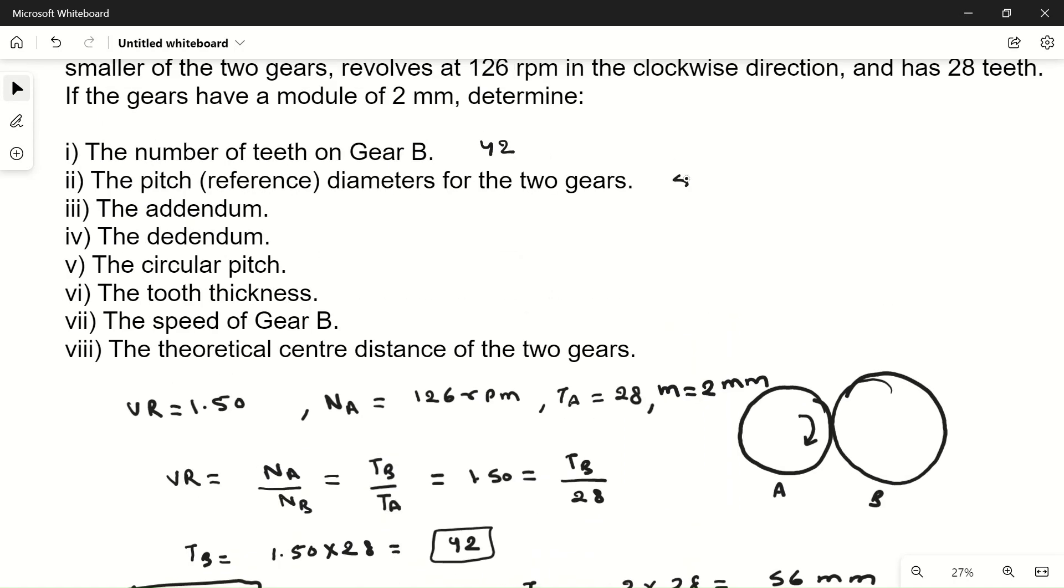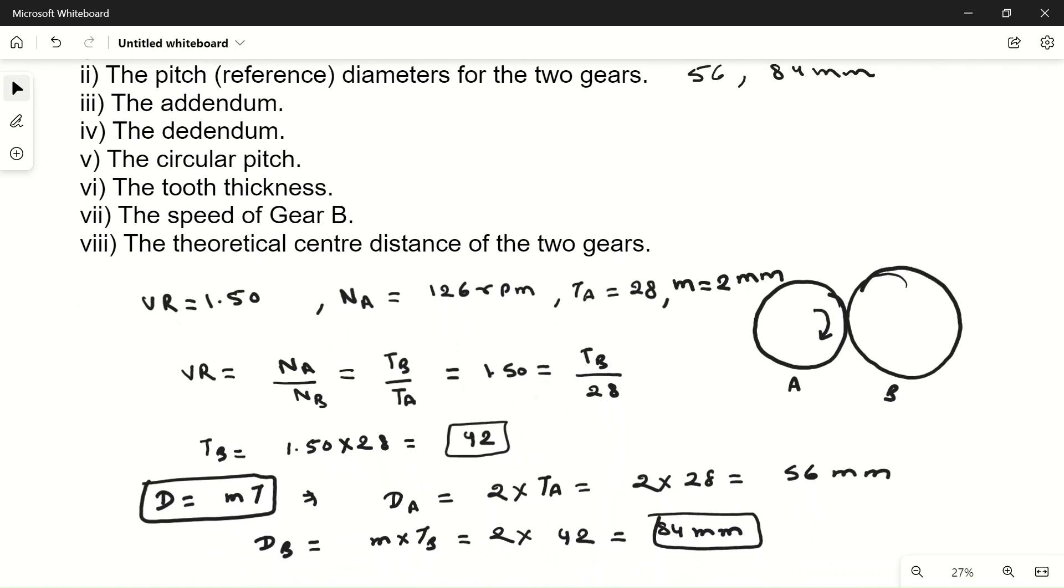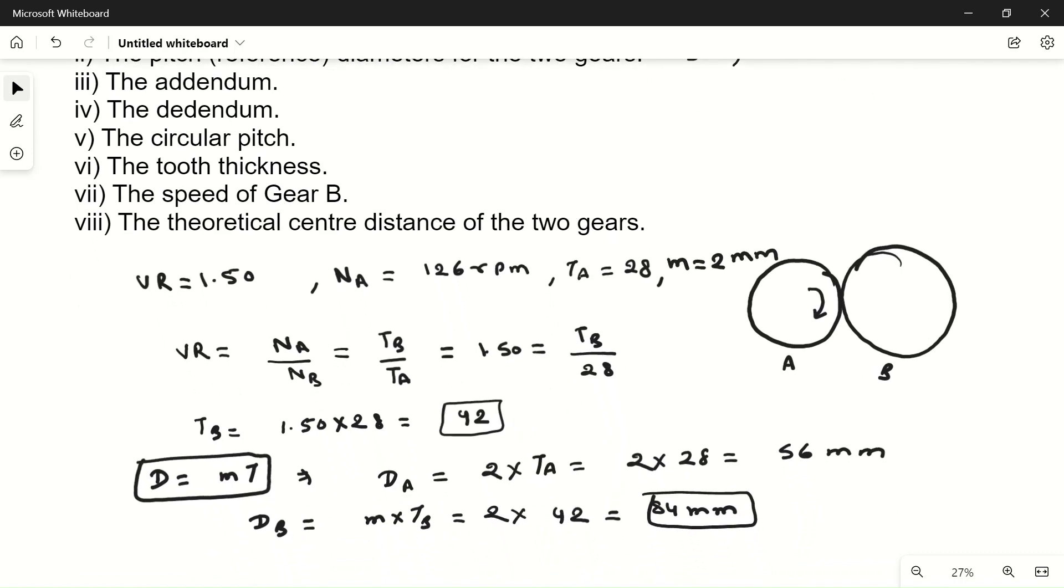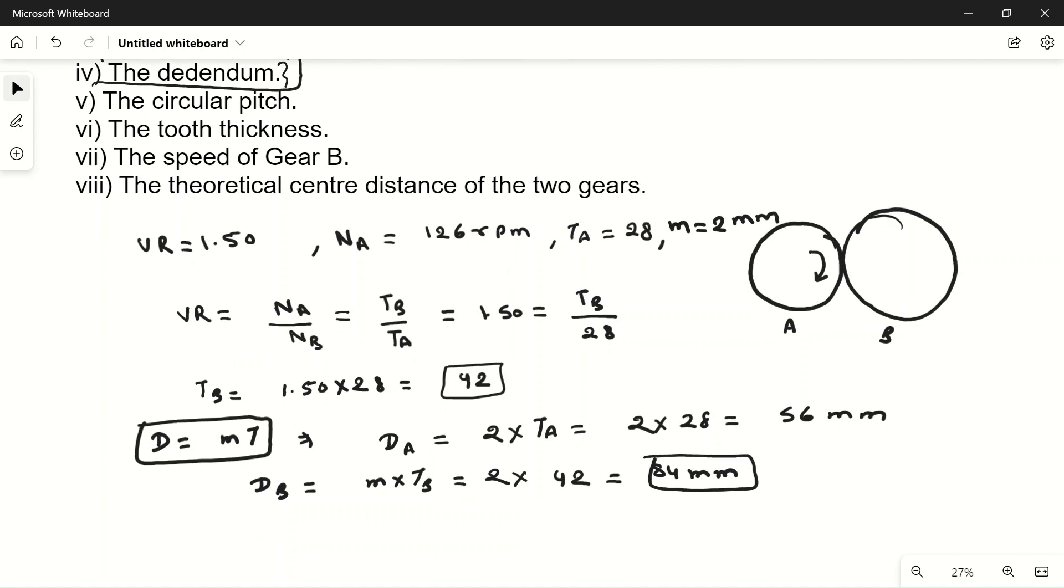The addendum. Addendum and dedendum cannot be found out because enough data is not given. Addendum and dedendum can be found from the tables, from the standard chart of the gears. We are not going to calculate these two in this problem.